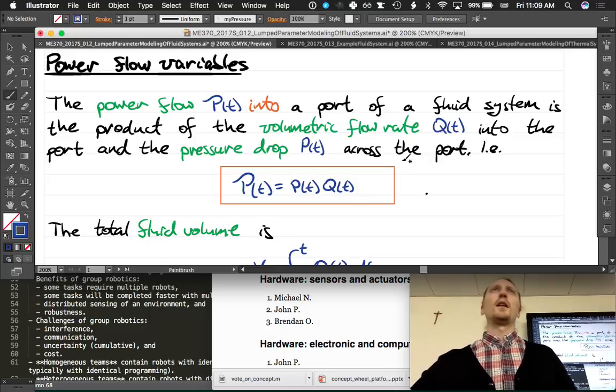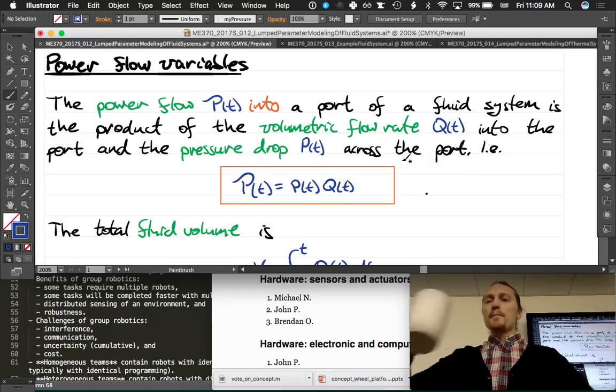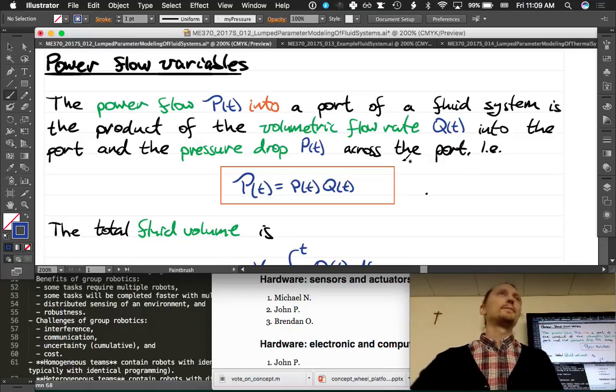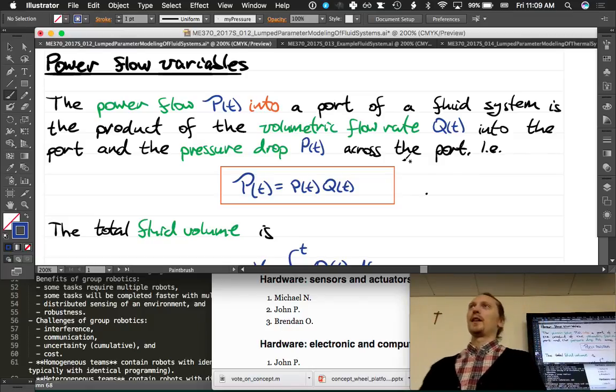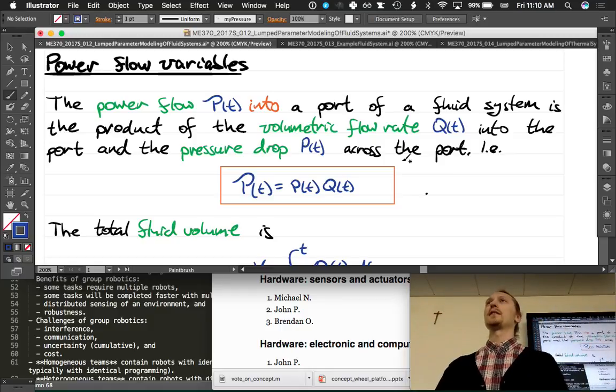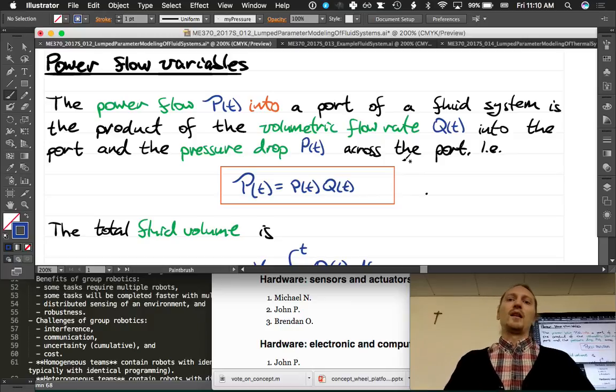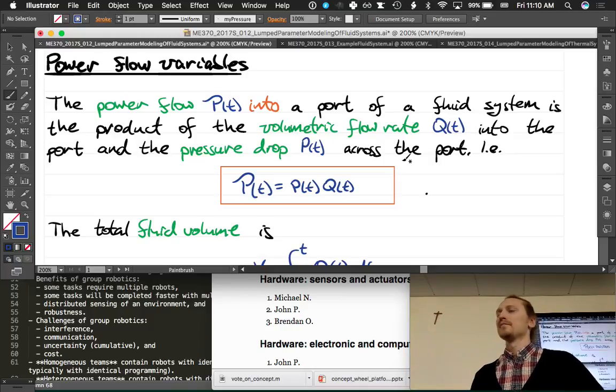What is the other type of flow rate you guys have dealt with in fluids? Mass flow rate. Good. Like in thermo. There's like a mass flow rate and there's a volumetric flow rate. We're talking about volumetric flow rates. What would an SI unit be for a volumetric flow rate? It's volume per unit at time, right? So cubic meters per second. Volumetric flow rate.